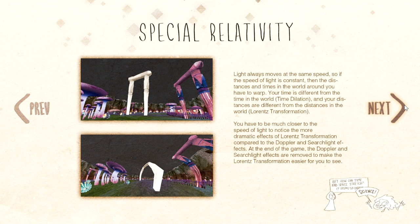Special relativity: light always moves at the same speed, so if the speed of light is constant, then the distances and times in the world around you have to warp. Your time is different from the time in the world — that's time dilation — and your distances are different from the distances in the world — that's the Lorentz transformation. You have to be much closer to the speed of light to notice the more dramatic effects of Lorentz transformation compared to the Doppler and Searchlight effects.